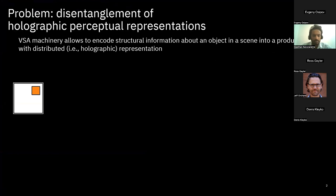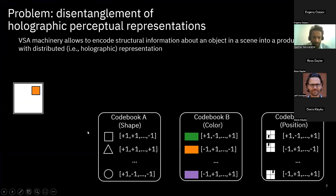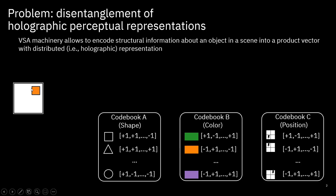The problem we are looking at is how to disentangle the information or attributes present in a given image using holographic representations. We try to first categorize different possible attributes into groups — we call them the codebooks. The attributes can come from different shapes, different colors, or different positions. In this particular example, it's an orange square on the top right side. The holographic representations, or high-dimensional vectors, correspond to the square vector, the orange vector, and the top-right position vector.